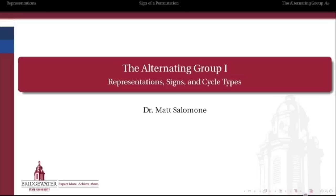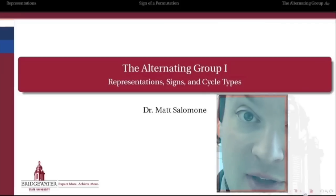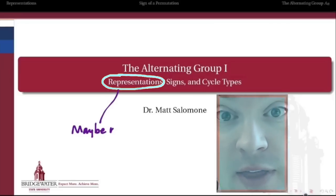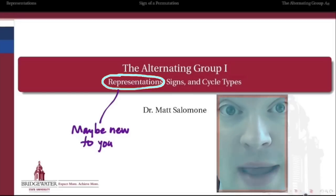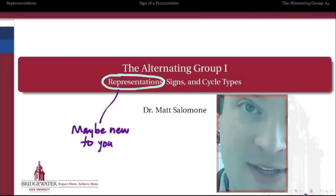We're going to start by talking about the alternating group in maybe a different framework than you've seen before, by first talking about what is a representation of a group. Representations are something that usually aren't covered in a first semester abstract algebra class — often not even in a second semester class. So we're not going to do them in a whole lot of detail. But I like the idea of representations because it is something new and it brings a little bit of linear algebra into our puzzle, so we get a chance to think about matrices and linear transformations, which is nice because it's visual.